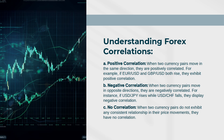Negative Correlation: When two currency pairs move in opposite directions, they are negatively correlated. For instance, if USDJPY rises while USDCHF falls, they display negative correlation. No Correlation: When two currency pairs do not exhibit any consistent relationship in their price movements, they have no correlation.